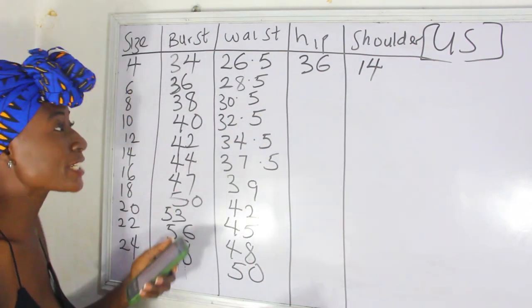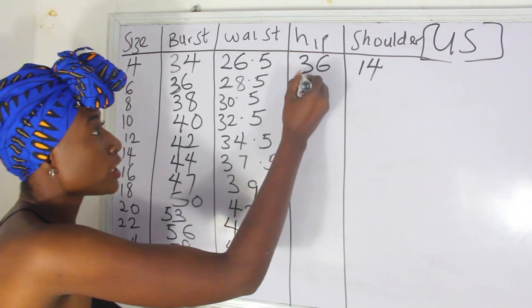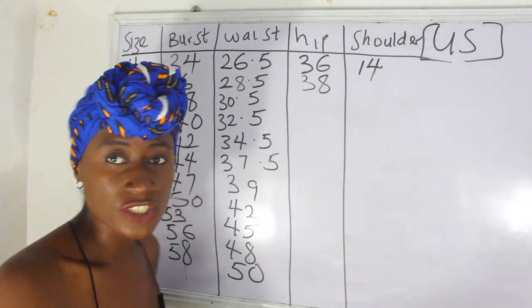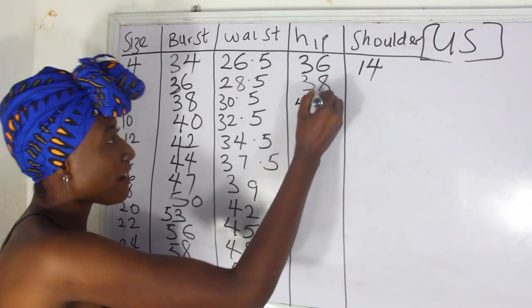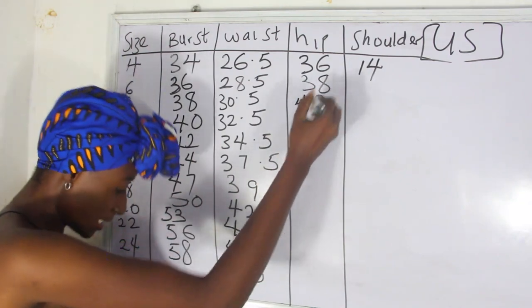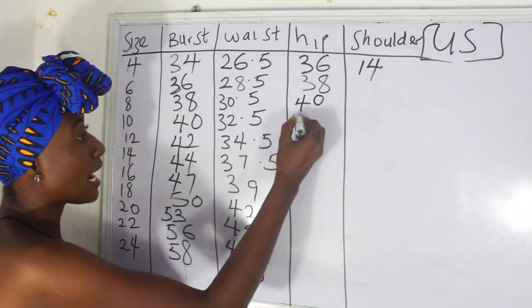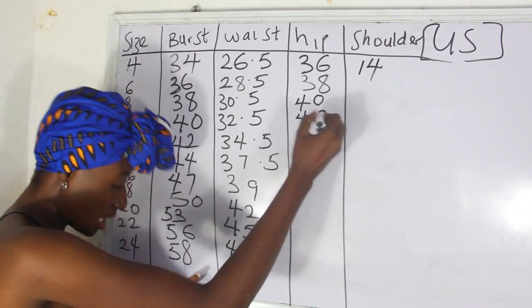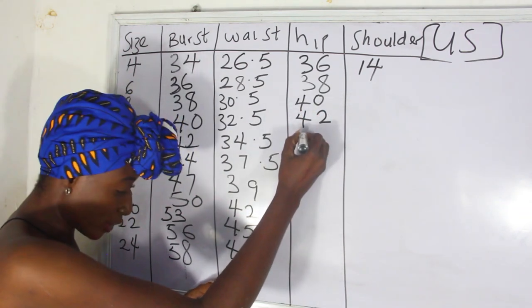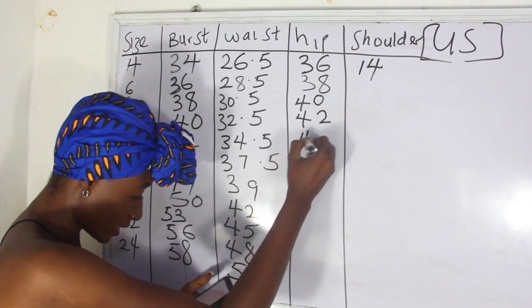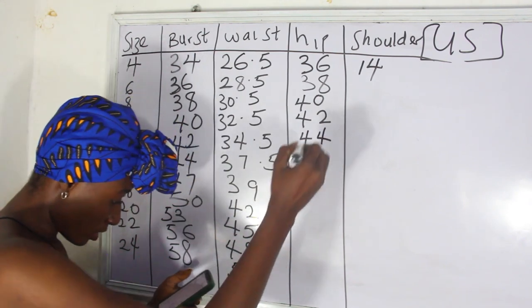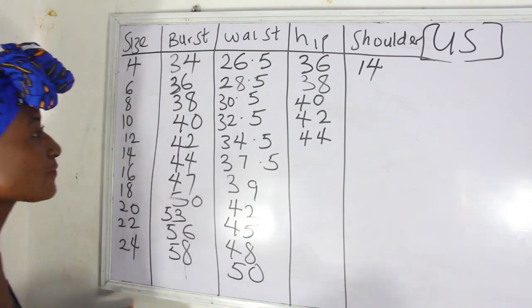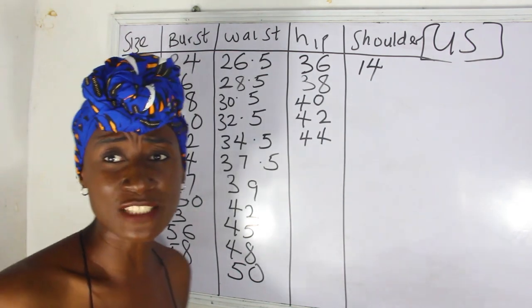For the hip measurements: size 4 is 36 inches, size 6 is 38 inches, size 8 is 40 inches, and size 10 is 42 inches — adding 2 inches each time.